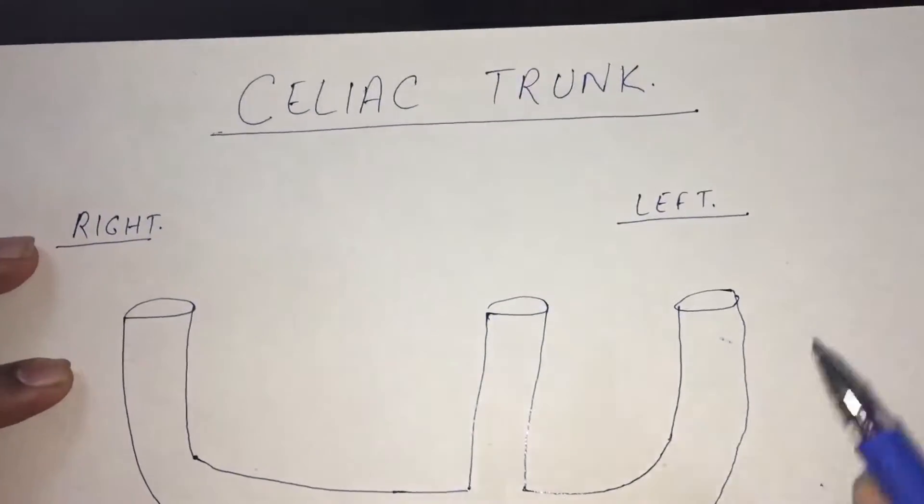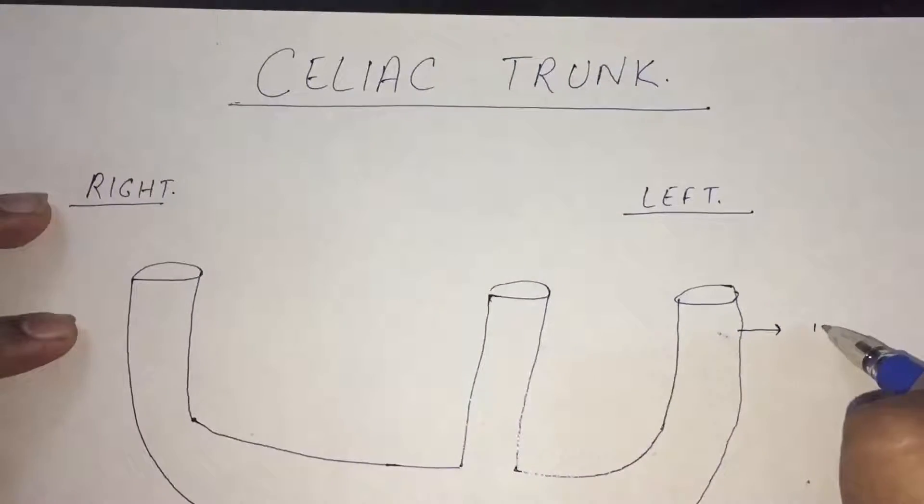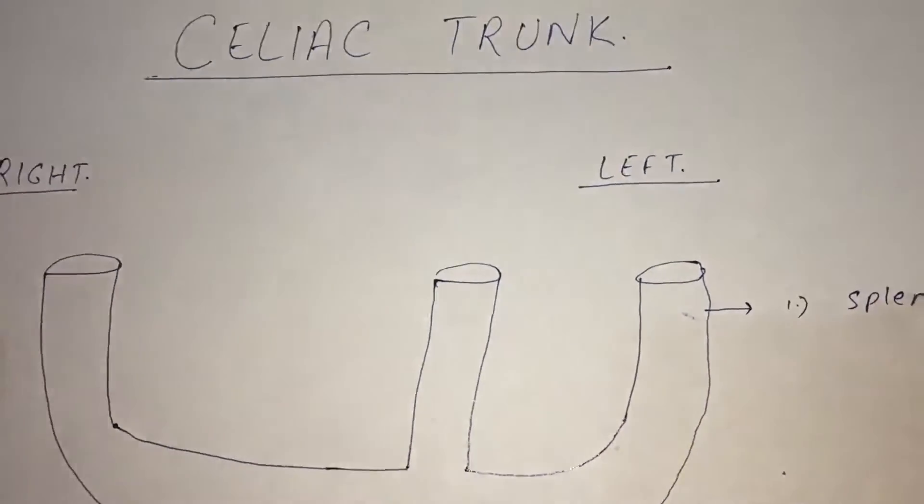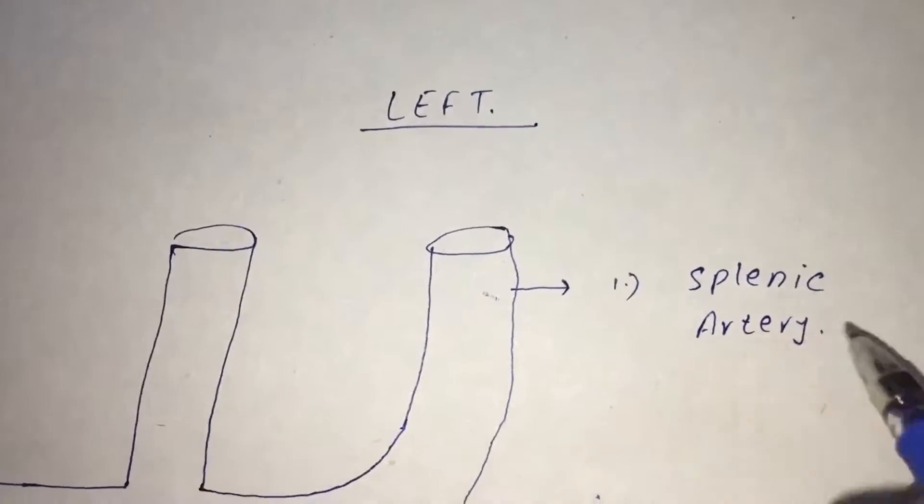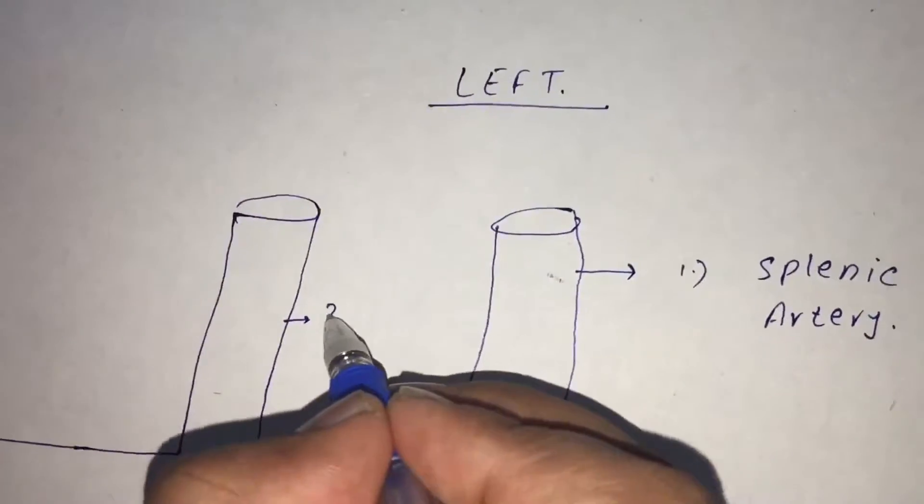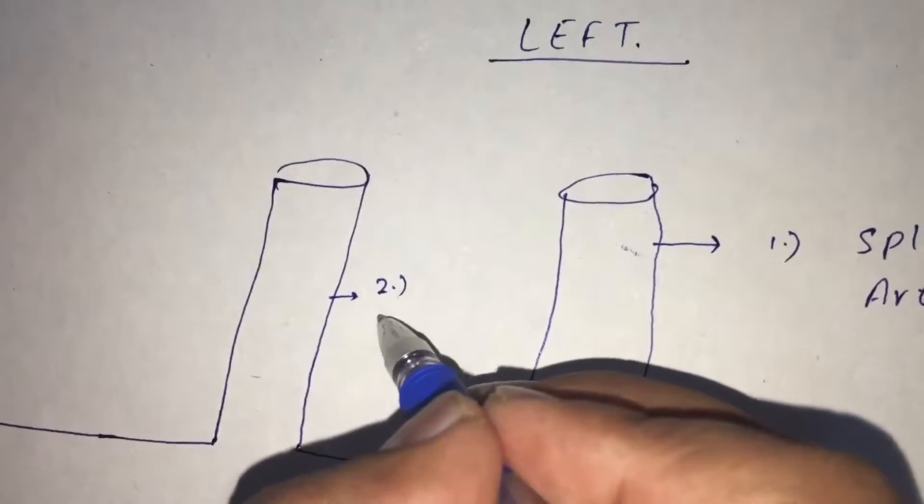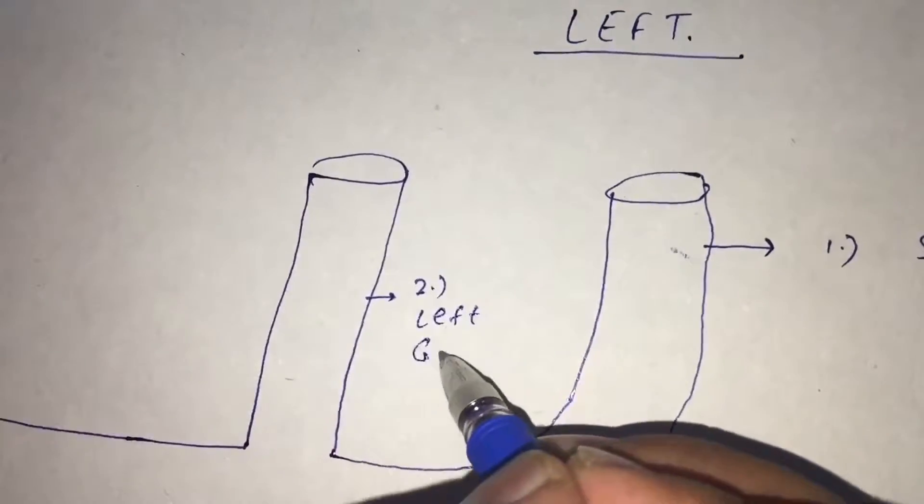You know from the normal anatomy that spleen is on the left. Hence, the splenic artery is on the left. Just adjacent to the splenic artery lies the left gastric artery. These are the two branches on the left.